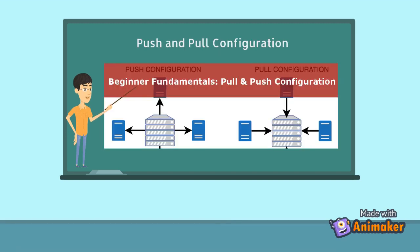There are two types of configuration in the DevOps world: Push Configuration and Pull Configuration. Let's study each in detail to understand what each one does and which tool uses which configuration.